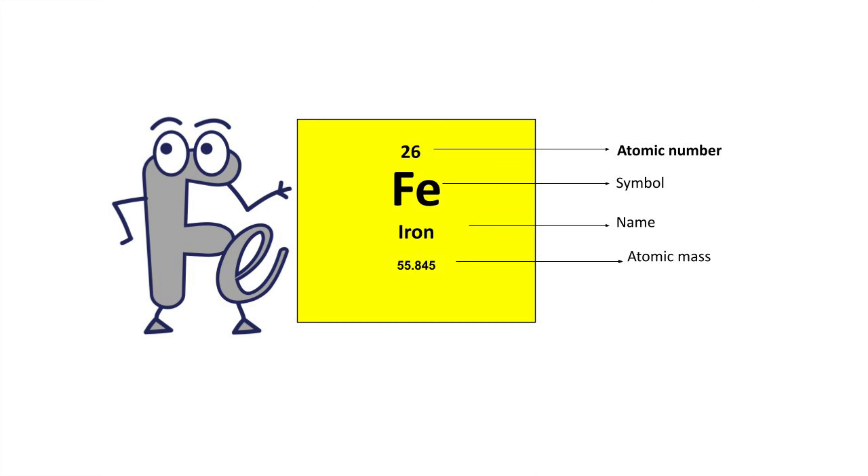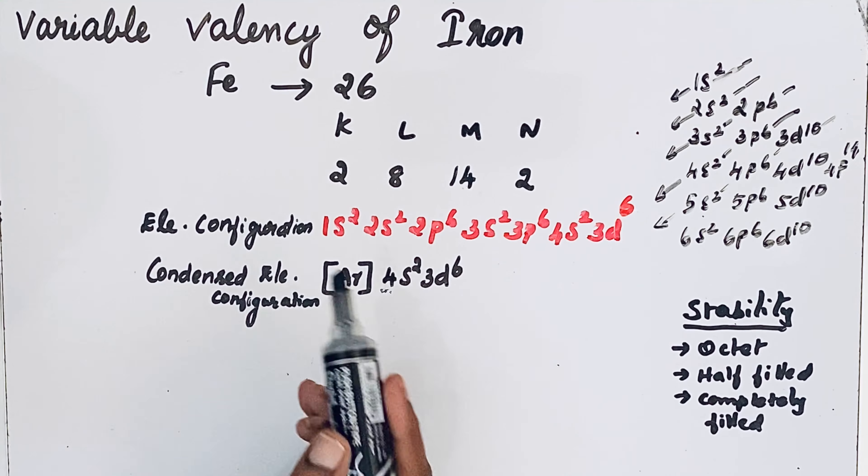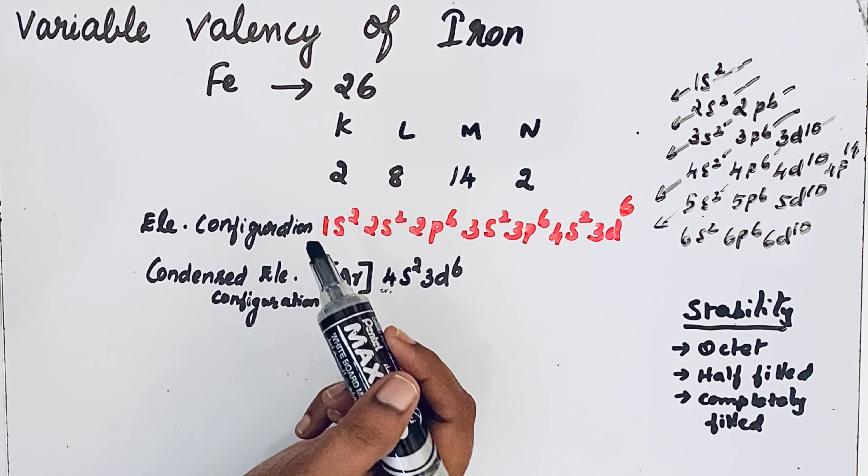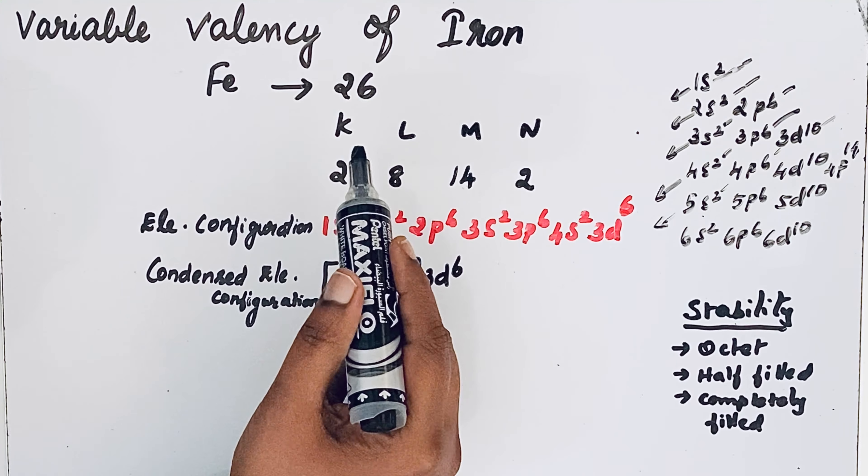Iron atomic number is 26. From that we can write the electronic configuration. So we have three methods of writing the electronic configuration for an atom of an ion.